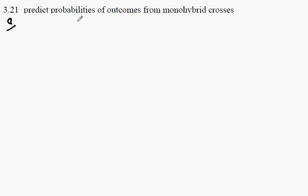Here we're predicting the probabilities or chances of outcomes. The outcomes are offspring from monohybrid crosses, crosses involving just one gene.